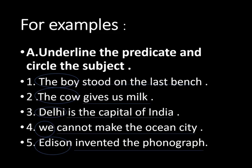Let's take some examples to understand subject and predicate. Question A: underline the predicate and circle the subject. Question 1: 'The boy stood on the last bench.' In this sentence, whom are we talking about? The boy. So 'the boy' is the subject, and 'stood on the last bench' is the predicate — the part that tells us what the subject does.